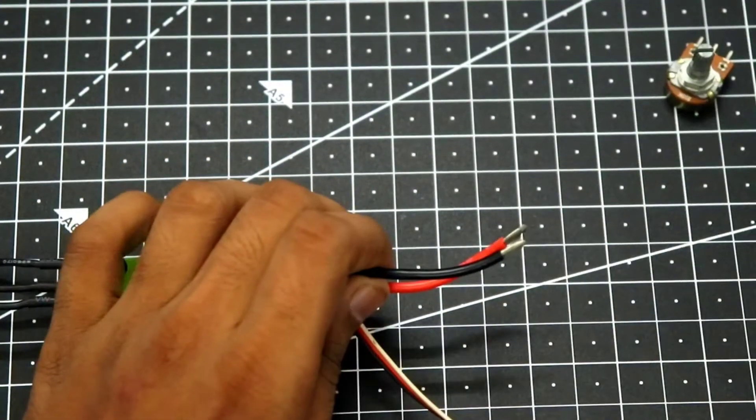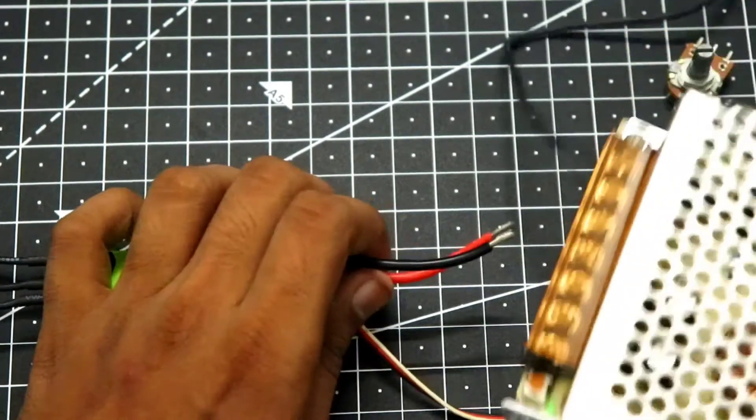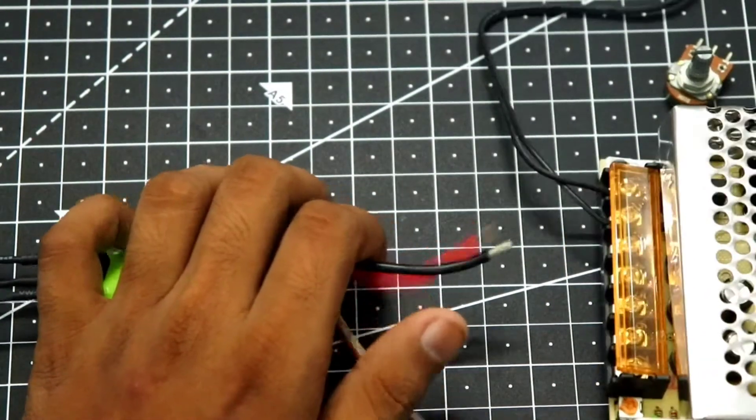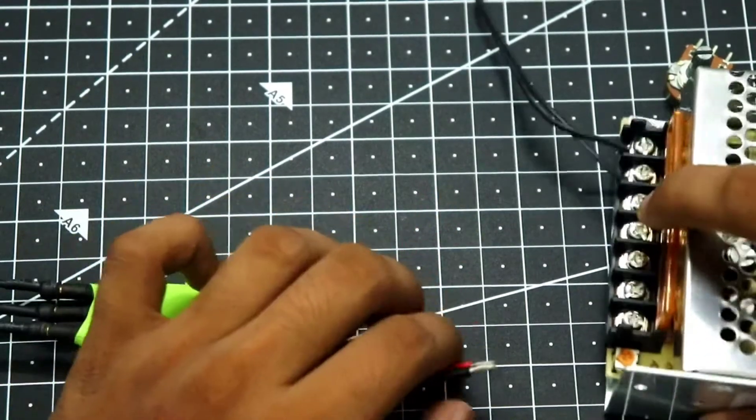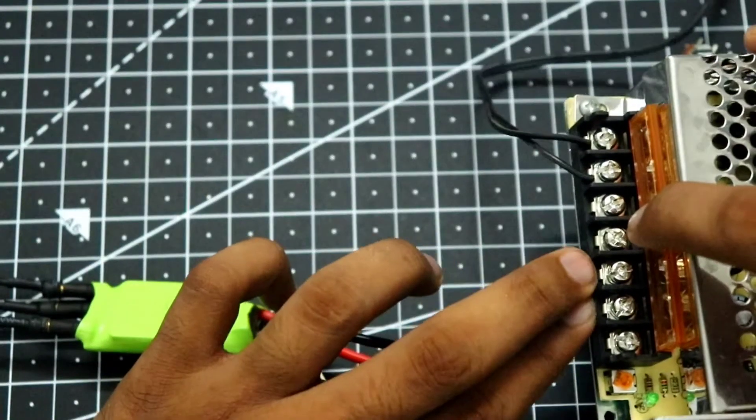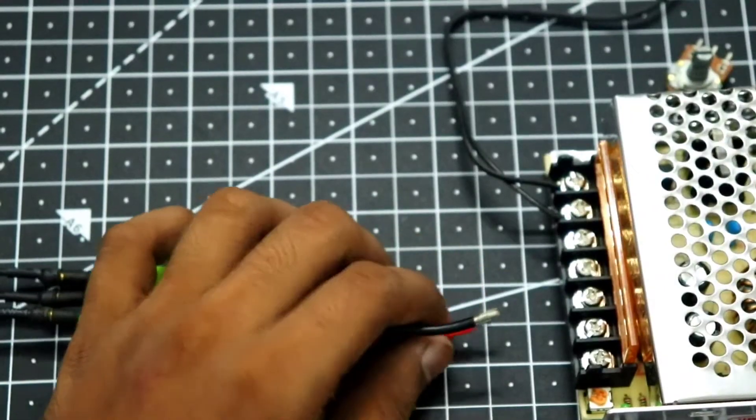And to power up the ESC, I am going to use this gigantic 12 volt power supply because I don't have my battery yet. So I will be connected to this power supply over here. There are a lot of connections over here, but we need to use only these two, which are the 12 volt output. Let's connect them.